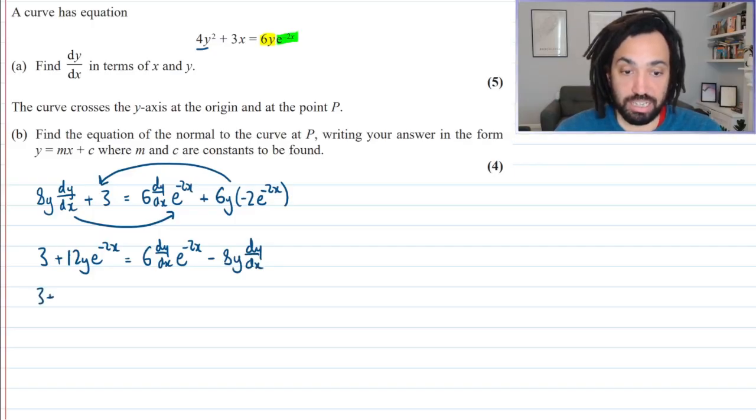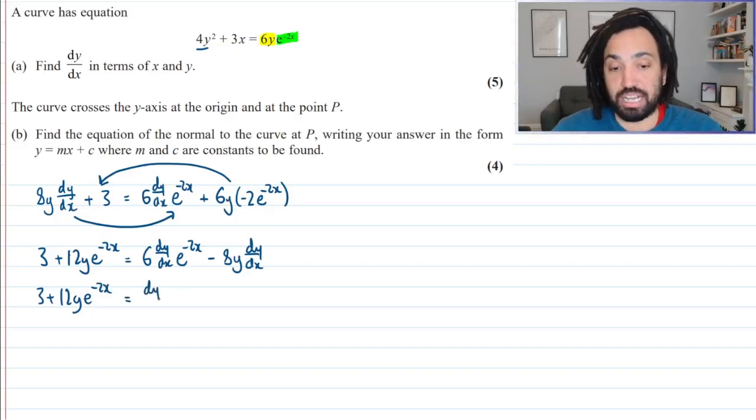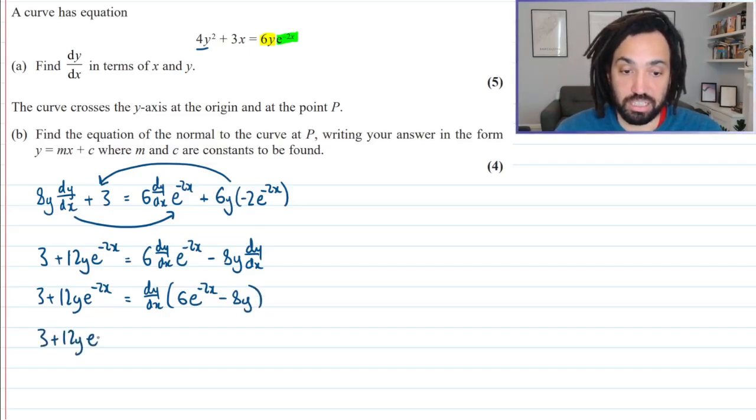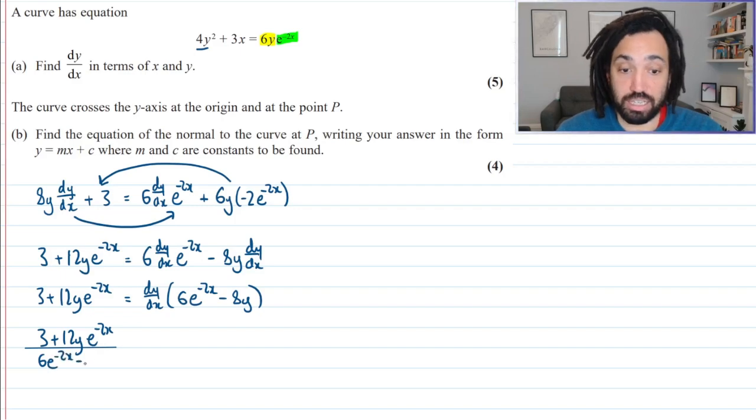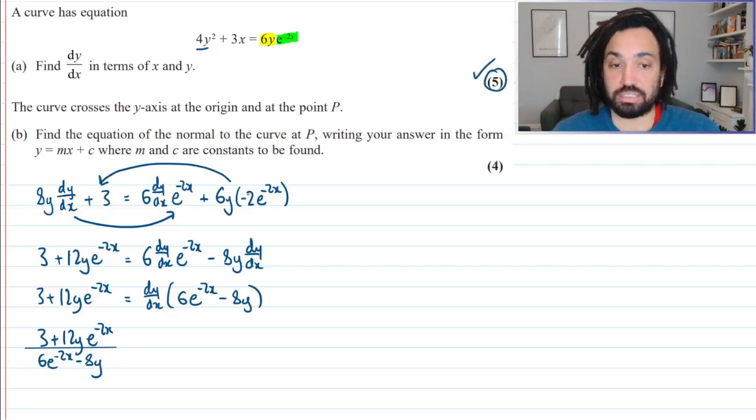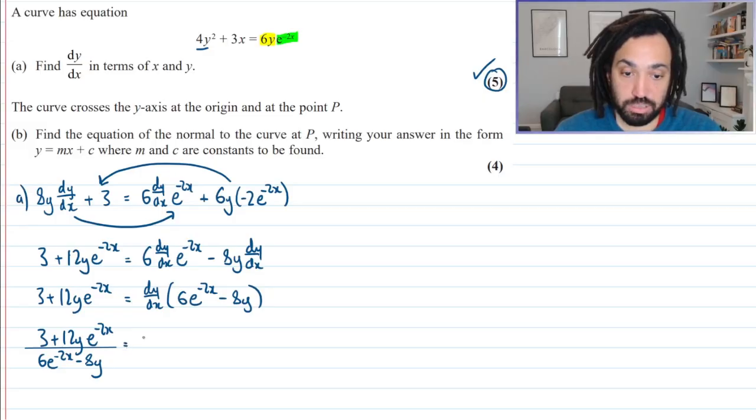So this allows me now to factorise the right-hand side and take out a dy by dx. So I'm left with the factor of 6e to the minus 2x minus 8y. And I can then divide through by that factor to isolate dy by dx and solve part a for a lovely five marks. Thank you very much. I should write dy by dx equals, obviously. There we go. Right, that was part a.